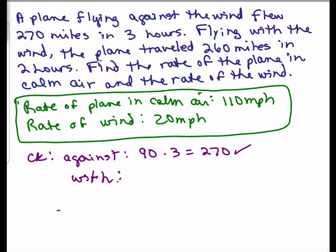Going with the wind, it's getting a boost. Even though the actual rate of the plane is 110, if the wind's pushing it along at 20 miles per hour faster, it's going 130 miles an hour. So going with the wind, the real rate is 130 miles an hour. Going for two hours would go 260 miles. And yes, it says it did go 260 miles in two hours. Therefore, our answer is correct.